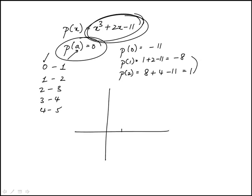If we were to plot this, at 0 it's -11, then at 1 it's -8, and then at 2 it goes to 1. So we know it's going to intersect the x-axis between 1 and 2.